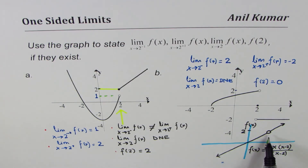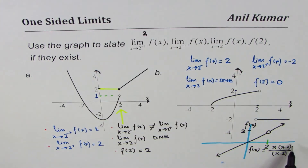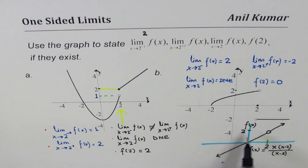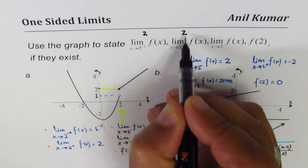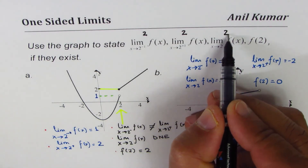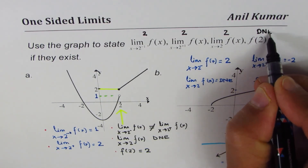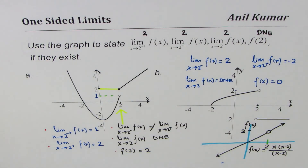The limit of this function as you approach from the left side is 2. As you approach from the right side along this line, you are again approaching the same value, 2. Since these two values — the left-side and right-side limits — are the same, the limit exists at 2 and it equals 2. However, the value of the function at 2 does not exist.